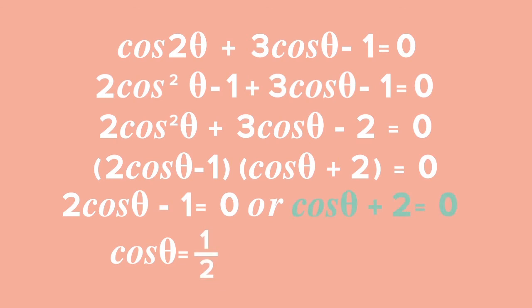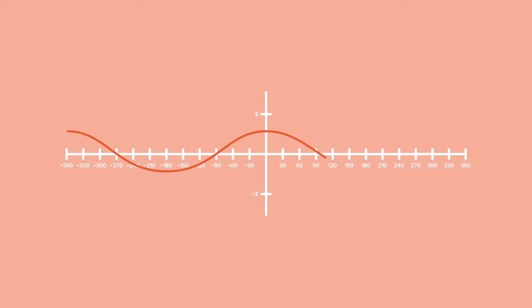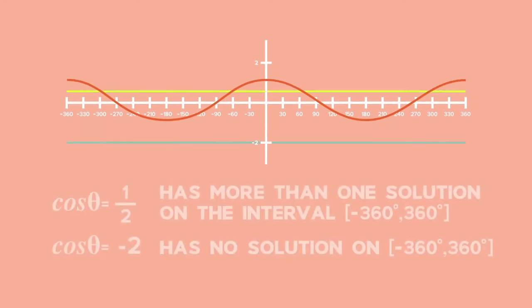From cos theta plus 2 equals 0, we get cos theta equals negative 2. Looking at the cosine graph on the interval from negative 360 degrees to positive 360 degrees, cos theta equals 1 half has more than one solution, whereas cos theta equals negative 2 has no solutions. The line y equals negative 2 lies below the cosine graph and does not intersect it at any point. Due to the periodic nature of trig functions, this pattern continues infinitely in both directions. Hence, cos theta equals negative 2 has no solution.